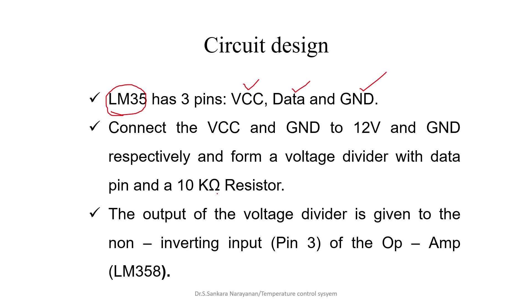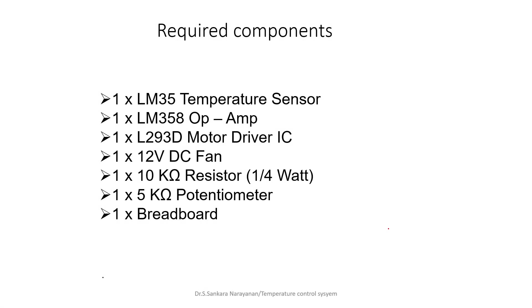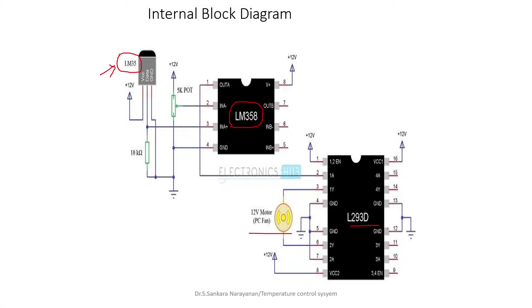The output of the voltage divider is given to the non-inverting input pin of the operational amplifier. Looking at the circuit diagram, the LM35 temperature sensor has its VCC connected to +12V, ground connected to ground, and the data pin forming the voltage divider, which is then connected to the non-inverting input pin of the LM358 operational amplifier.